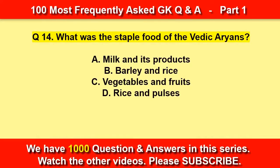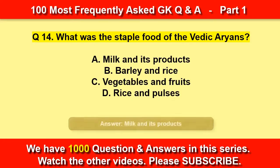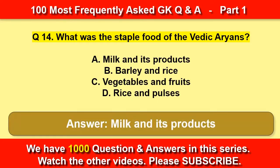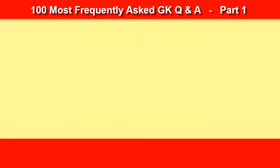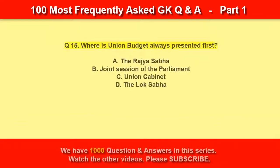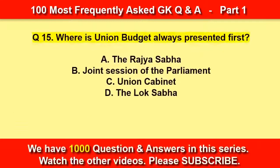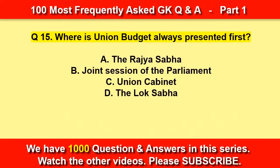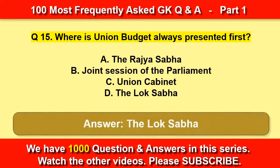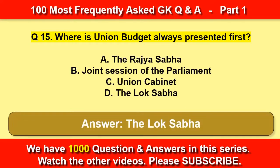What was the staple food of the Vedic Aryans? Milk and its products. Where is the union budget always presented first? The Lok Sabha.